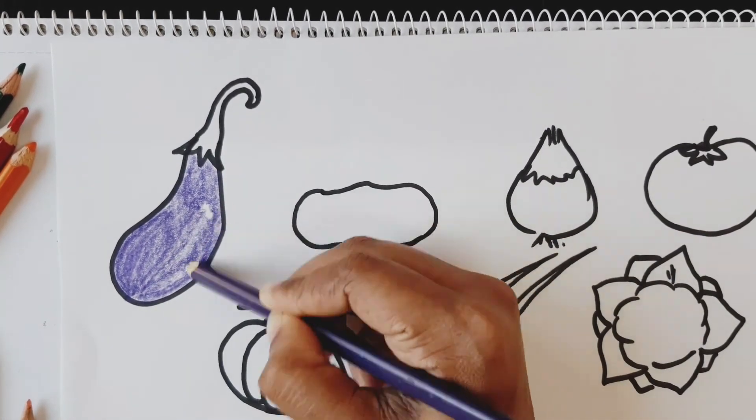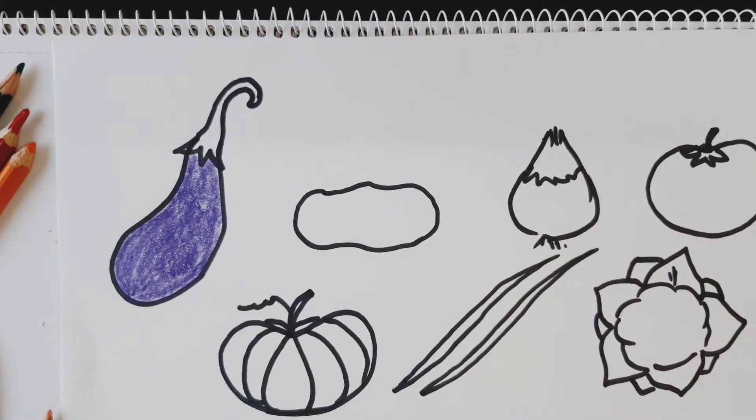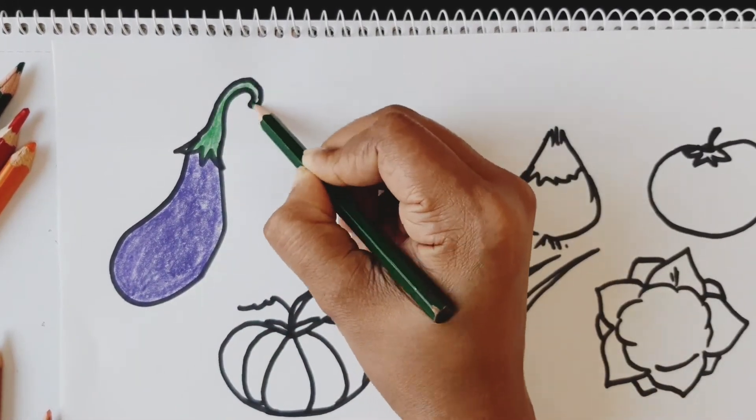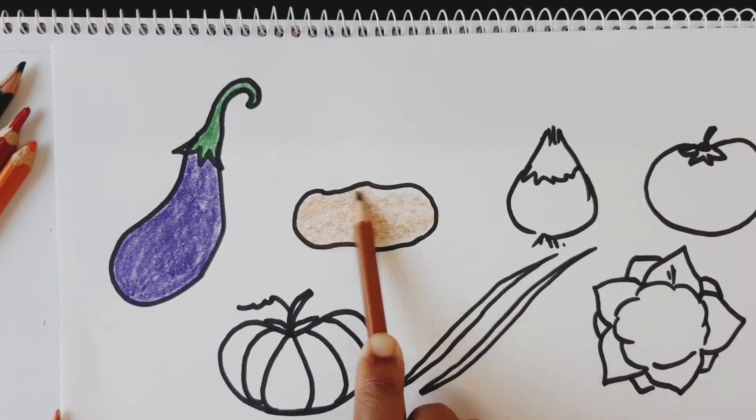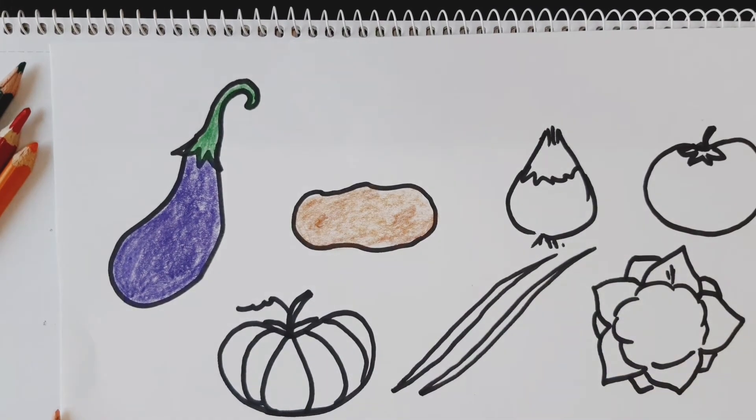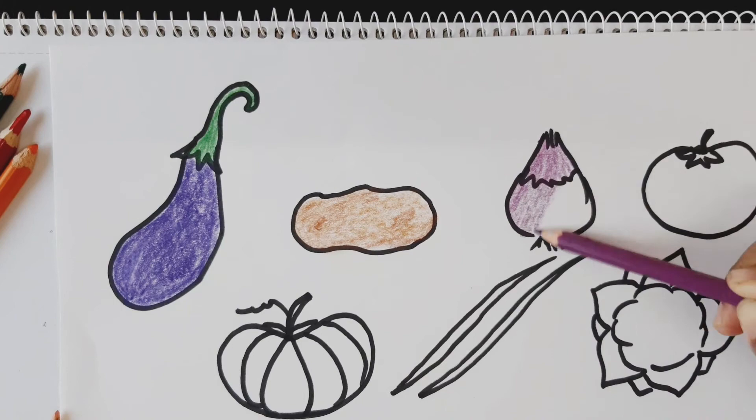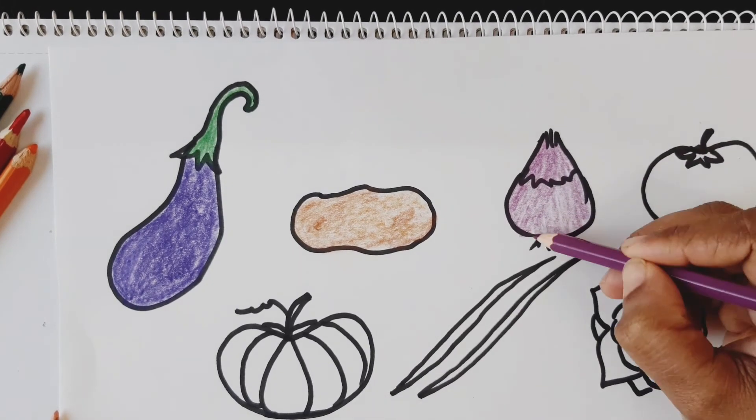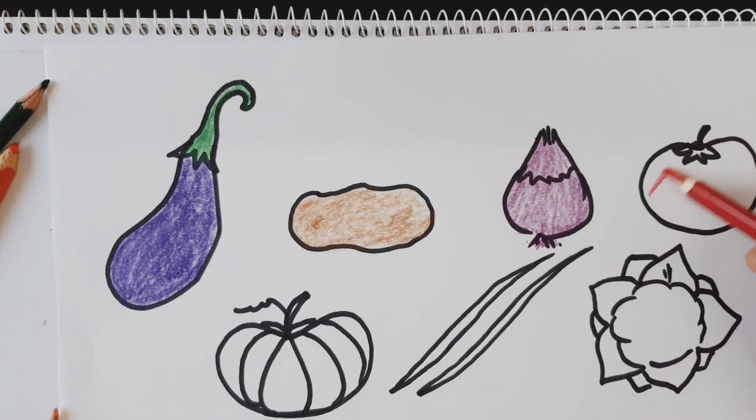I have given a purple color to the brinjal, the light shade for the potato, purple color for the onion, then tomato.